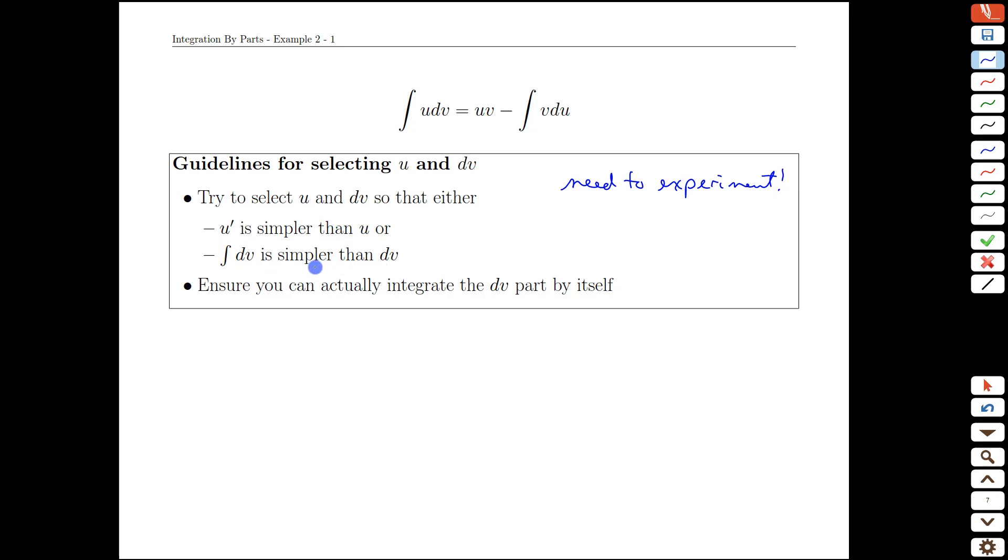The second one tends to be a more important one. The dv part, you're going to have to integrate that. So ideally that integral should be simpler than what you started with and actually the bigger barrier is you might have chosen a dv that can't be integrated either easily or at all. And so that would point to a problem with that udv split. If you can't actually integrate dv, go back and pick something that you can integrate before you go any further.